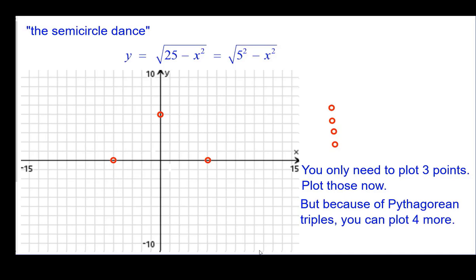However, because we have Pythagorean triples in these, we can plot 4 more. I want to make sure you realize that. So for example, at 4, 3, we've got a 3, 4, 5 triangle. At 3, 4, we have a 3, 4, 5 triangle because the radius is 5. Negative 3, 4, we've got a 3, 4, 5 triangle. And negative 4, 3, also another 3, 4, 5 triangle.